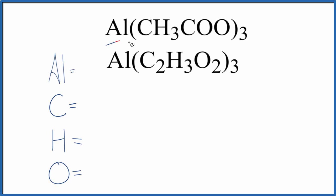Let's find the number of atoms for Al(CH3COO)3. This is aluminum acetate. This is another way we could write aluminum acetate here, Al(C2H3O2)3.